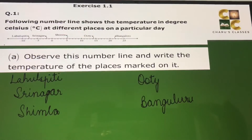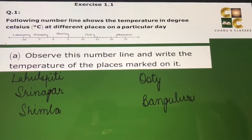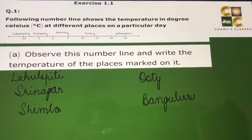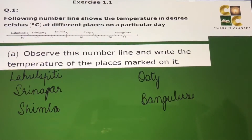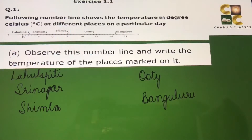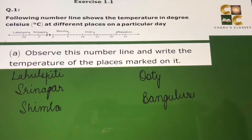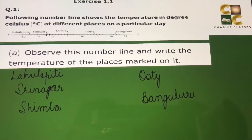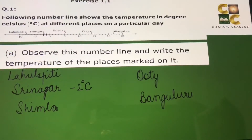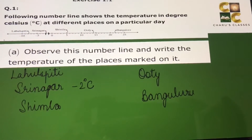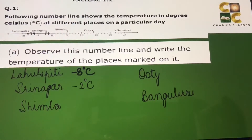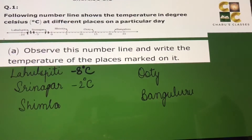On the right hand side of zero we have the positive numbers, and on the left hand side of zero there are negative numbers. We'll go first to the left hand side of zero for the negative temperatures. After zero, minus one, minus two — so as we can see, Srinagar is minus 2 degrees Celsius. Continuing further, minus eight is Lahulspiti, so we write minus 8 degrees Celsius.